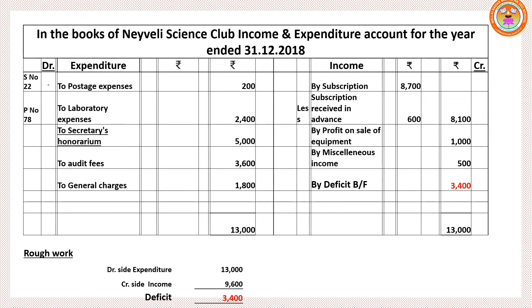Write the heading: In the books of Naiveli Science Club, income and expenditure account for the year ended 31st December 2018. Create expenditure and income side — debit side and credit side. From the payment side: balance brought down (bank overdraft) won't appear. Postage expenses 200 — revenue transaction. Science equipment purchase is an asset — capital transaction, won't appear here. Laboratory expenses 2,400. Secretary's honorarium 5,000. Audit fees — recurring, revenue transaction — 3,600. General charges — revenue transaction — 1,800. Exhibition expenses will be shown in balance sheet.